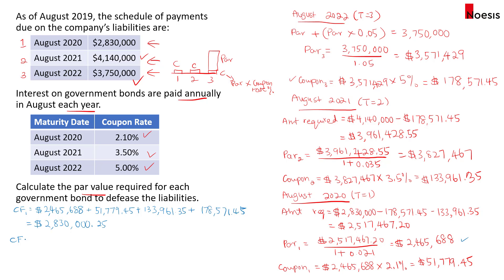For the second period, we take the par value of the two-year bond ($3,827,467) plus its coupon ($133,961.35) plus the three-year bond coupon ($178,571.45). Summing everything gives us $4,139,999.80, which is very close to $4.14 million.